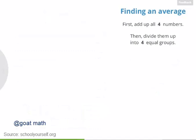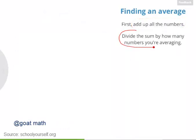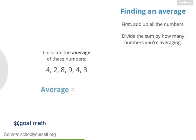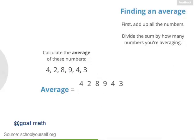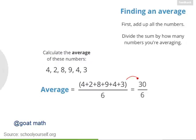The general strategy for finding the average is to first add up all the numbers and then divide that sum by how many numbers you're averaging. Try calculating the average of these six numbers: 4, 2, 8, 9, 4, and 3. You can add up these numbers — there are six of them — so we divide the sum by 6. This adds up to 30, and 30 divided by 6 is 5.